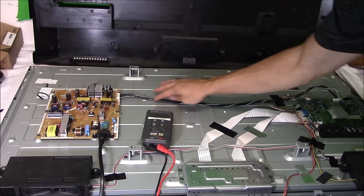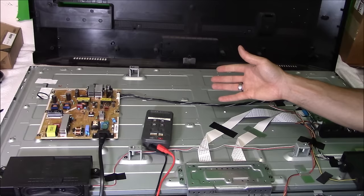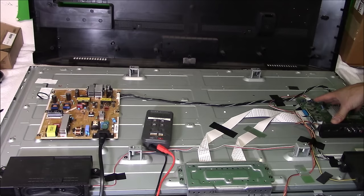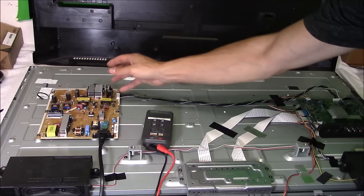So when you hit the power button on the TV or on the remote it first goes to the main logic board and then that signal gets sent out to the power board and then the high voltage turns on. So without the standby voltage this board is dead.